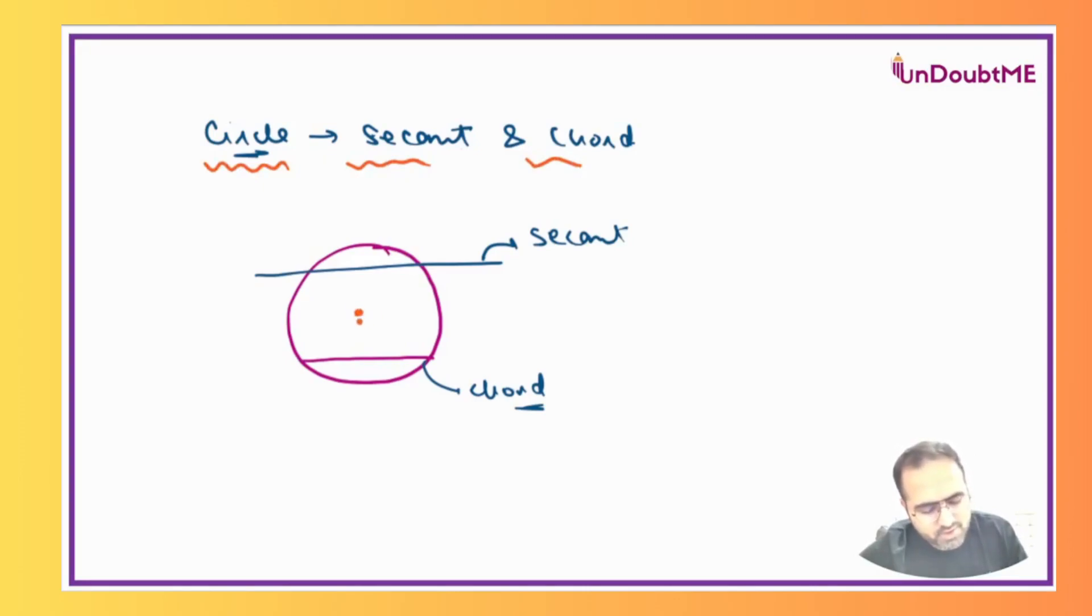Like if there is a perpendicular from the center, it should bisect the chord. Bisect the chord means if AB is a chord, then P will be the midpoint.